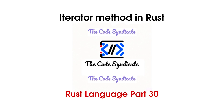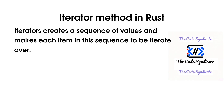Hello everyone and welcome back to the Code Syndicate. Today we'll discuss iterators in Rust. Iterators create a sequence of values and allow each item in this sequence to be iterated over.